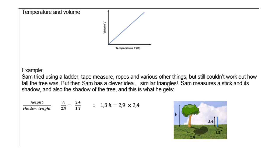So look at the example. Sam tried using a ladder, tape measure, ropes, and various other things, but still couldn't work out how tall the tree was. But then Sam has a clever idea. Similar triangles. Sam measures a stick and its shadow, and also the shadow of the tree, and this is what he gets.